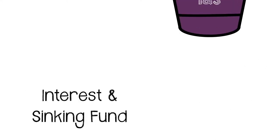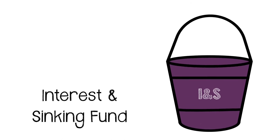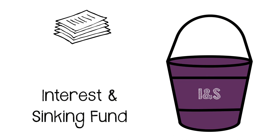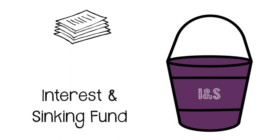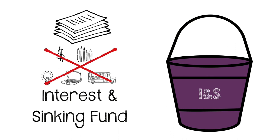The second bucket is called Interest and Sinking Fund, or I&S. You will also hear it referred to as debt service. The money from this bucket can only be used for payments on voter-approved bonds and cannot be used for maintenance and operations.